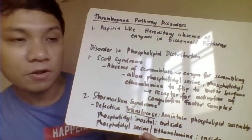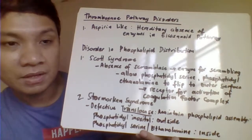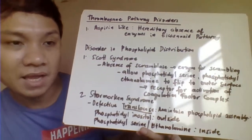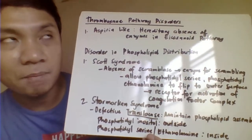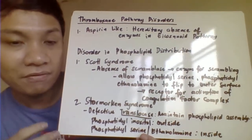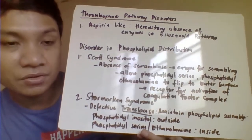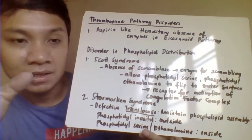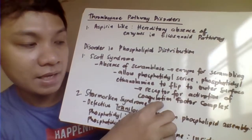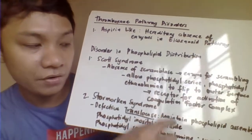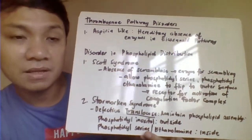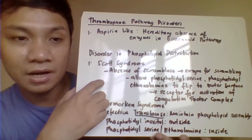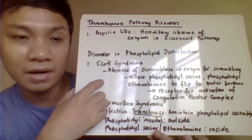Next is the disorder related to phospholipid distribution. SCAT syndrome is characterized by a defect in scramblase — the enzyme that allows phosphatidylserine and phosphatidylethanolamine to flip to the outer surface during platelet activation. During normal platelet activation, phosphatidylserine and phosphatidylethanolamine flip outside to serve as surface receptors for activation of vitamin K-dependent coagulation factors. In SCAT syndrome, this flip does not occur, so coagulation complex formation is not activated.